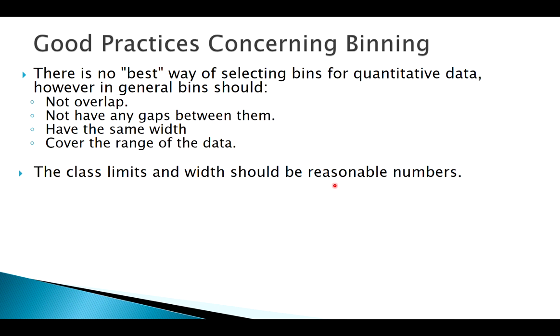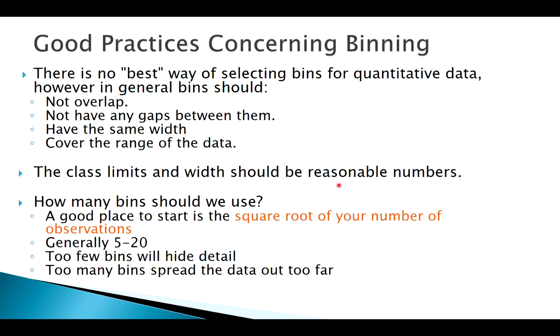So another question is, well, how many bins should we use? Well, generally a nice starting point is the square root of your number of observations. So it depends on how many observations, but anywhere from five to twenty bins is usually pretty good. We don't want too few because it'll just come out looking like a big box, but we don't want too many because that can kind of create some weird effects also. So again, this is when we have quantitative data that may not have a perfect intuitive way of breaking it up.